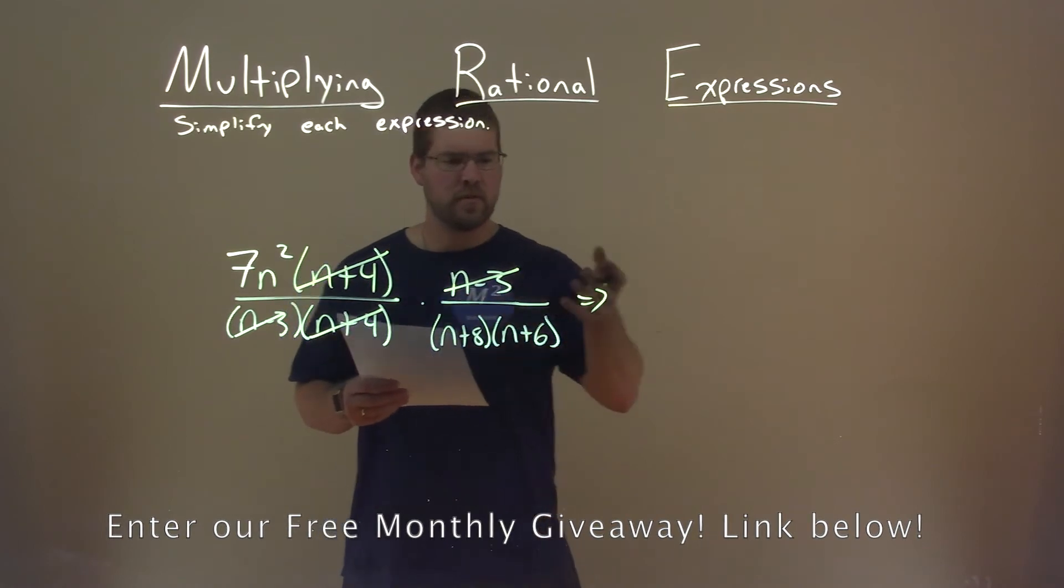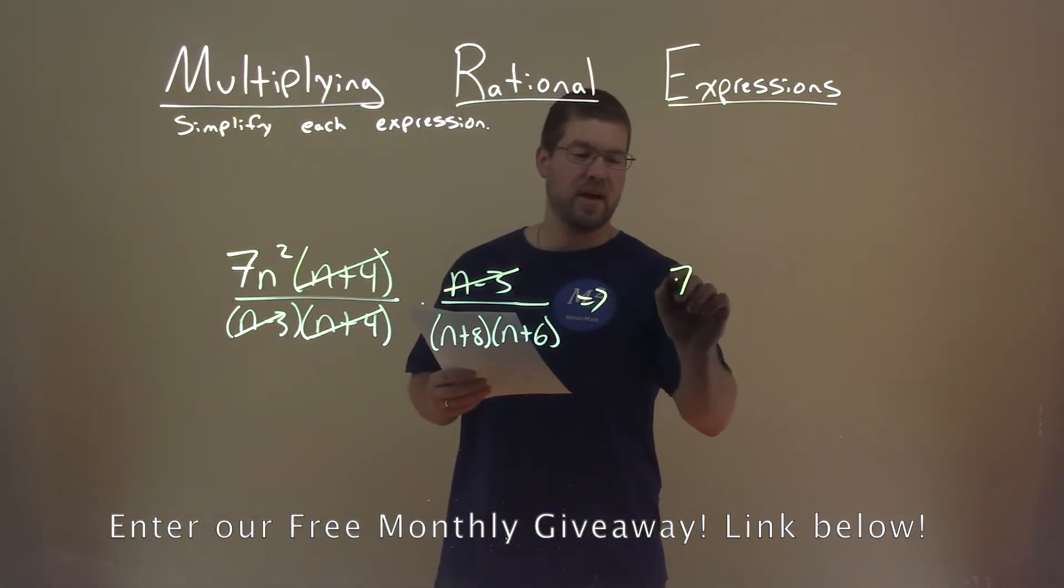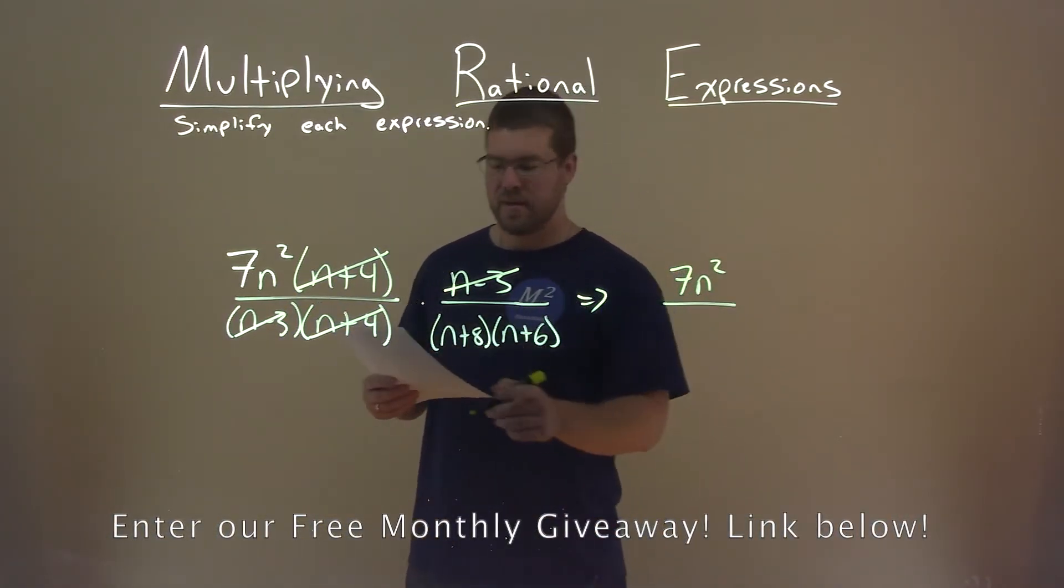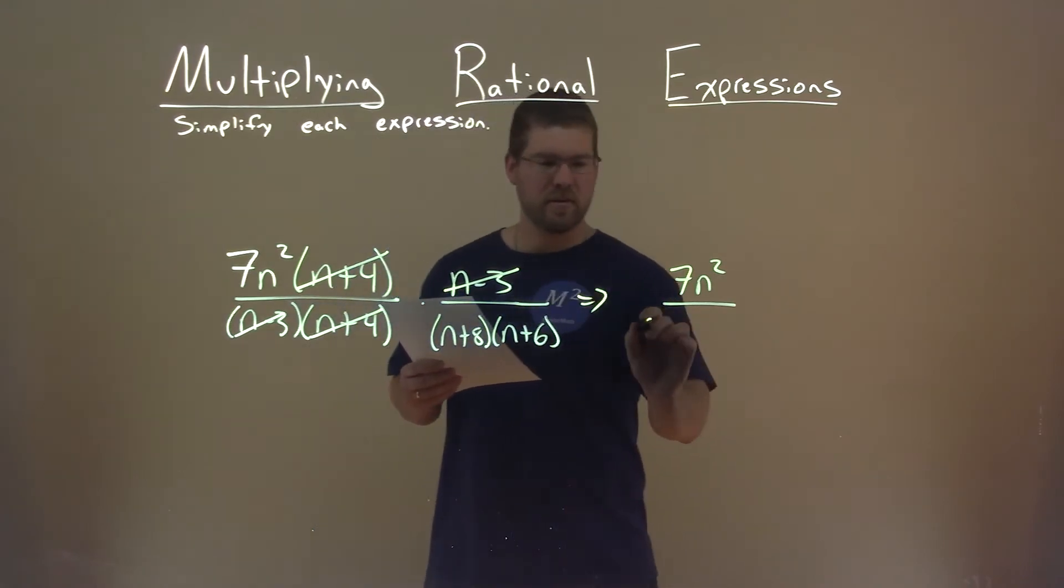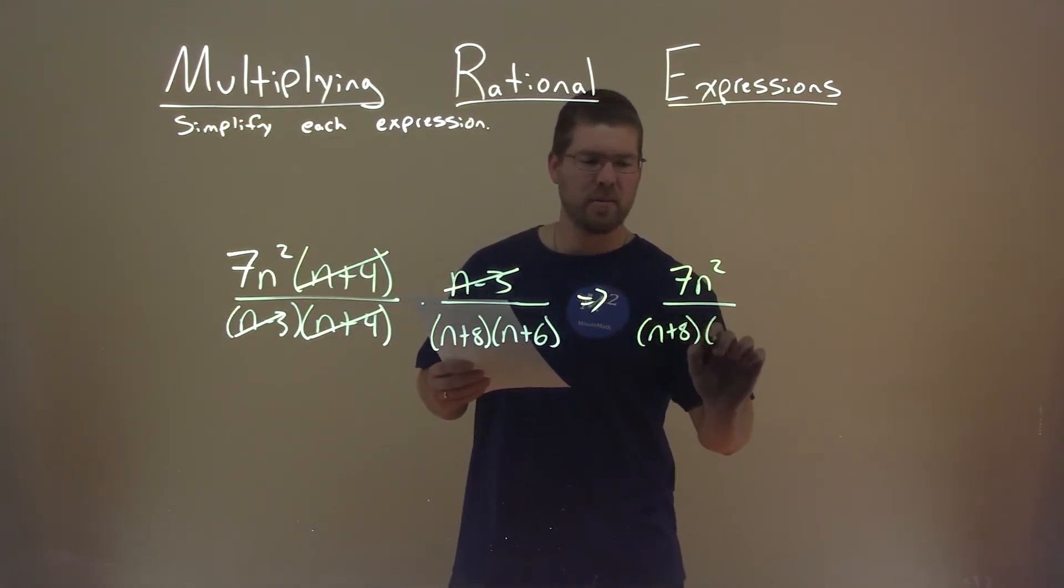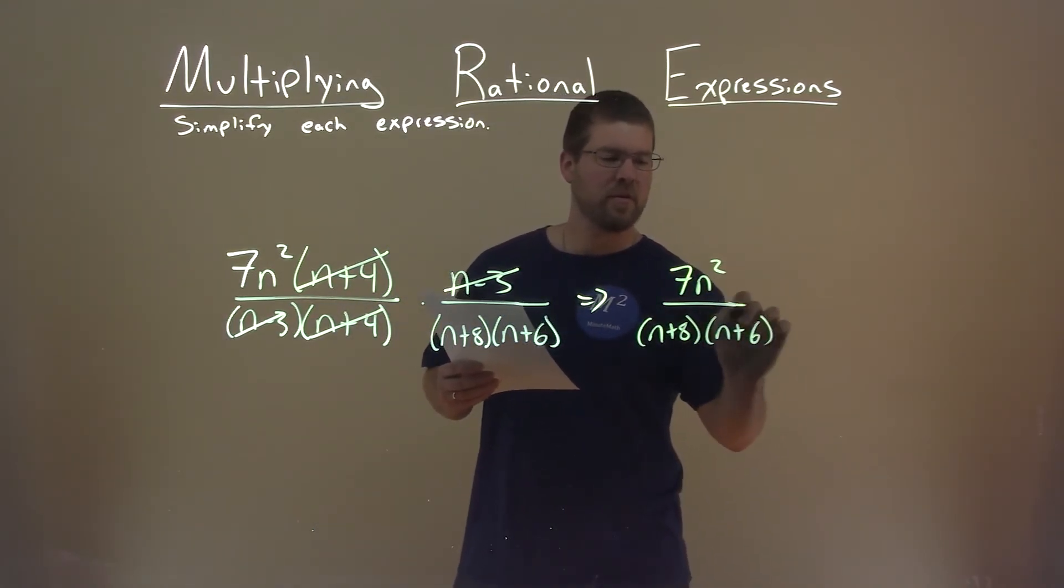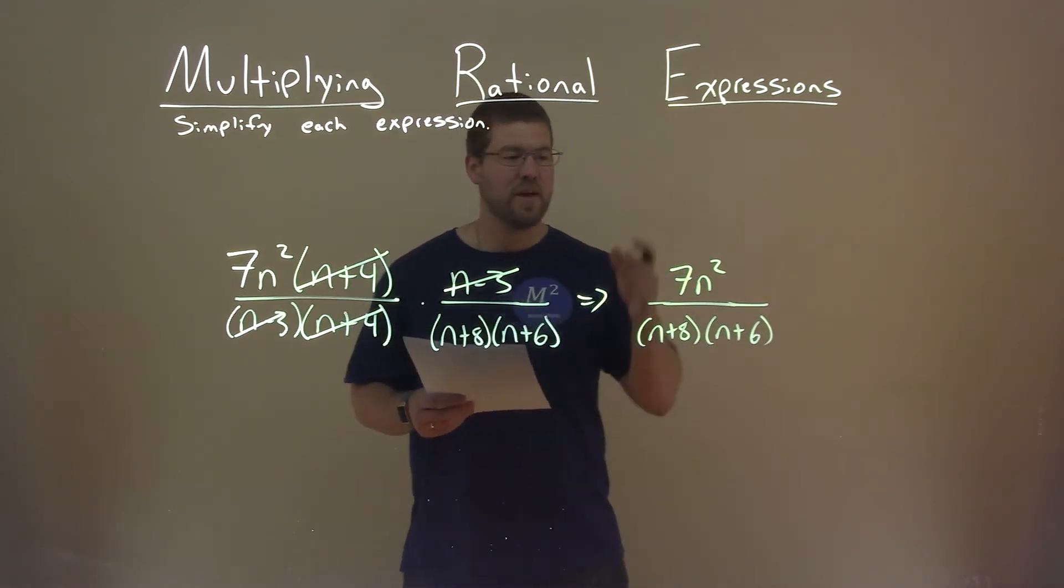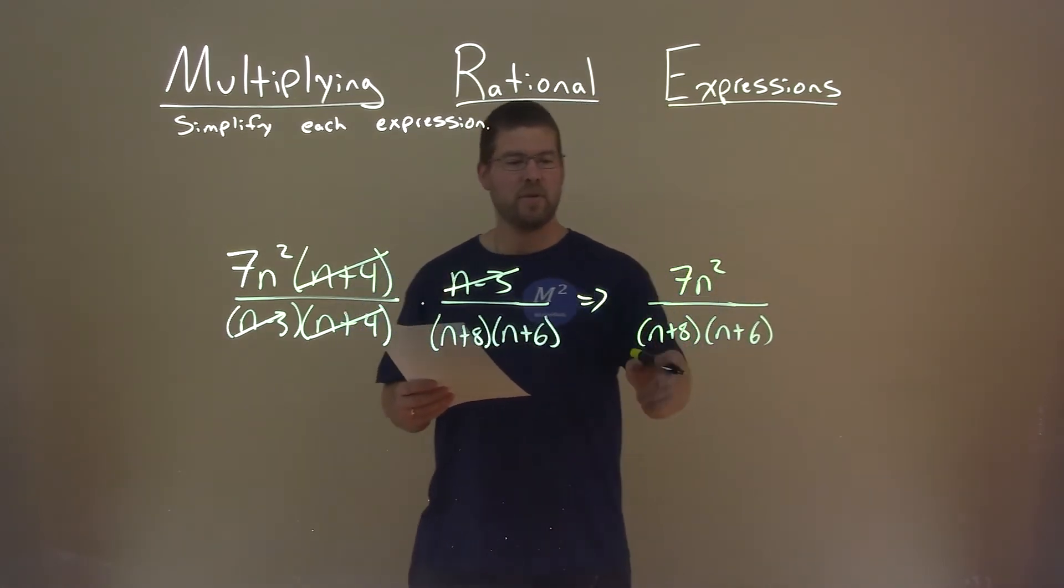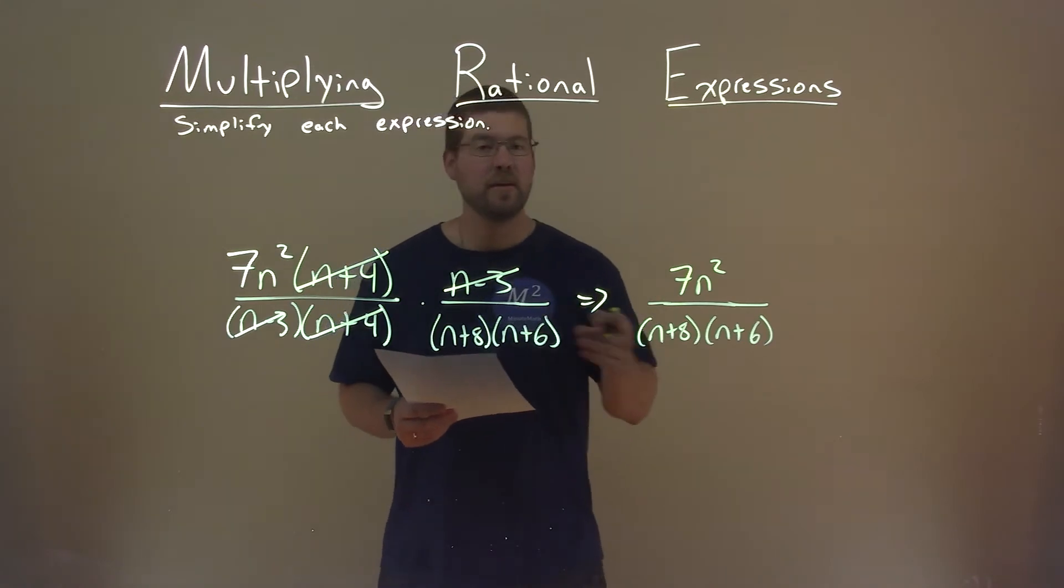So, let's go multiply across the numerator. Well, it's just a 7n squared left over. The denominator is just that, right here. n plus 8 times n plus 6. That's all that's left over. And there we have it. 7n squared divided by n plus 8 times n plus 6 is our final answer.